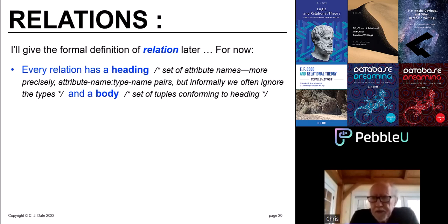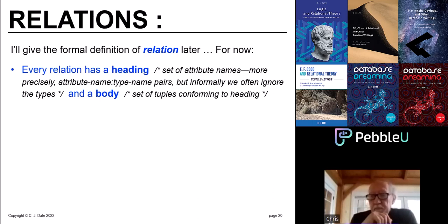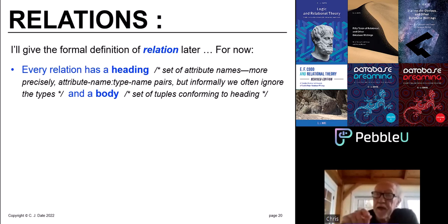Relational databases have relations in them. I'll give you the formal definition of relation later, but here are some important points. First, every relation has a heading — the heading is basically the attribute names, like for suppliers: supplier number, supplier name, status, and city. It's a set of attribute name/type name pairs, because along with every attribute there's a certain type. Every relation also has a body, which is a set of tuples that conform to the heading. The suppliers relation has a heading and a set of tuples, each with a supplier number, supplier name, status value, and city value.